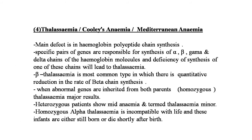The fourth condition is thalassemia, also called Cooley's anemia or Mediterranean anemia. The main defect is in hemoglobin polypeptide chain synthesis — specific gene pairs are responsible for synthesis of alpha, beta, gamma, and delta chains. Deficiency in one chain leads to thalassemia. Beta thalassemia is the most common type, with a quantitative reduction in beta chain synthesis rate. Homozygous thalassemia major results when abnormal genes are inherited from both parents; heterozygous patients show mild anemia (thalassemia minor). Homozygous alpha thalassemia is incompatible with life.